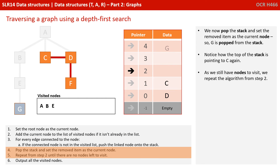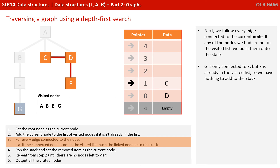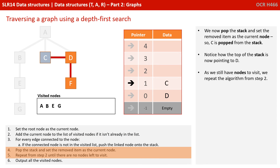We now pop the stack and set the removed item as the current node, so G is popped from the stack. Notice how the top of the stack is pointing to C again. As we still have nodes to visit, we repeat the algorithm from step 2. We add G to the list of visited nodes. G is only connected to E, and E is already in the list, so we have nothing to push onto the stack. We pop the stack, therefore removing C. The top of the stack now points at D, and we repeat the algorithm from step 2.